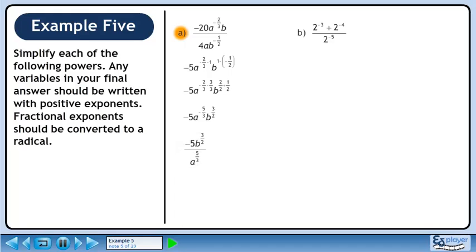Bring a raised to the minus 5 over 3 to the denominator and change the sign of the exponent. b raised to the 3 over 2 is written in radical form as the square root of b cubed. a raised to the 5 over 3 is written in radical form as the cube root of a raised to the power of 5.